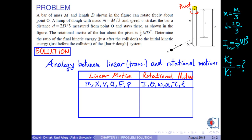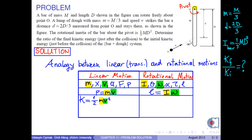Linear momentum is defined by the formula M times V, where M is the mass and V is the linear speed of the object. Kinetic energy of an object under linear motion is defined by the formula one-half times mass times linear speed squared. If we multiply and divide this formula by M, we obtain one-half Mv squared over M. Since Mv is linear momentum, we obtain P squared over 2M.